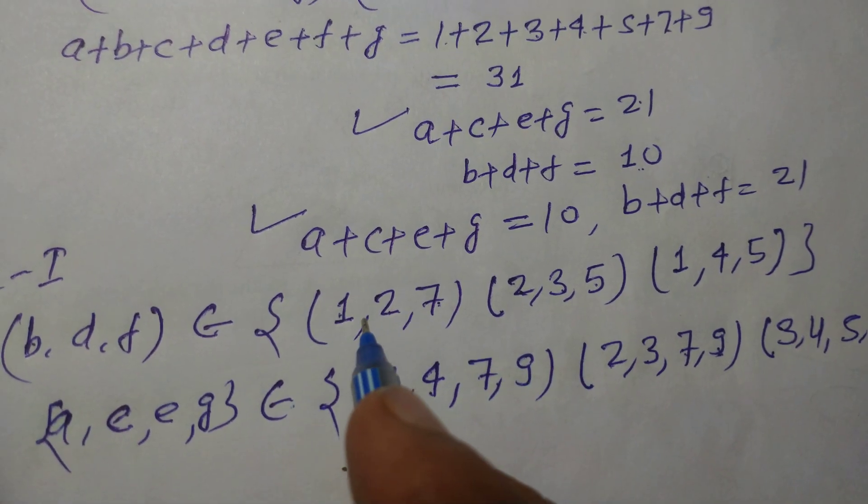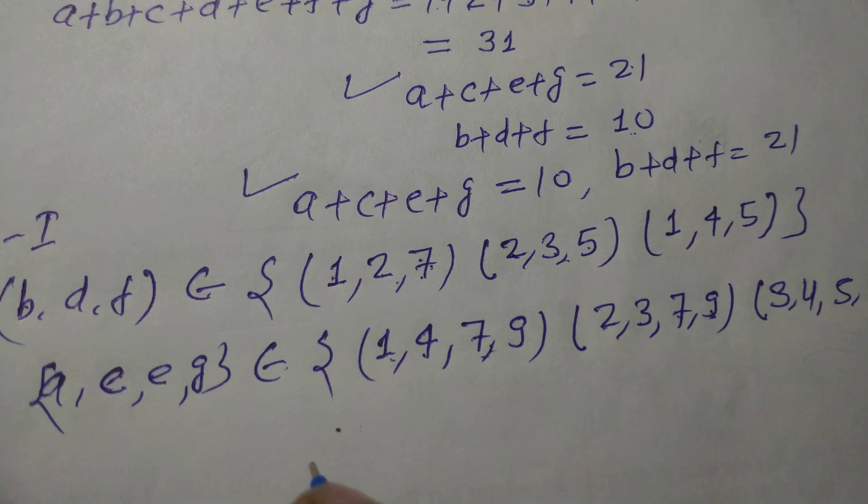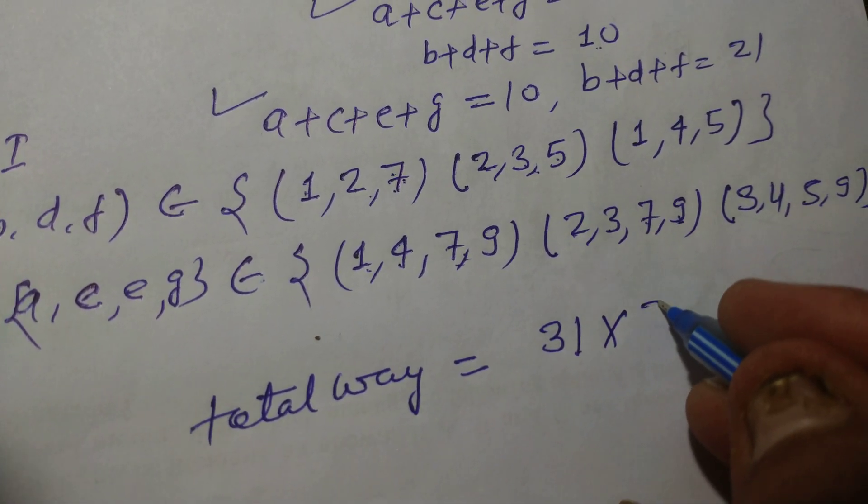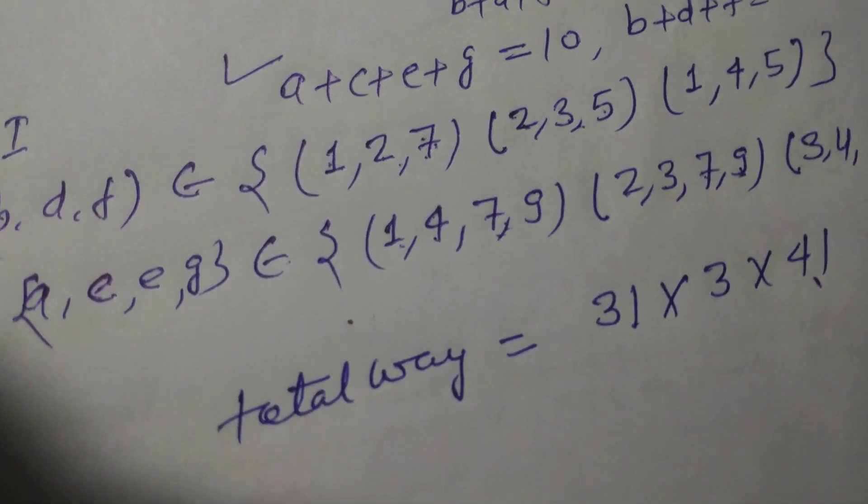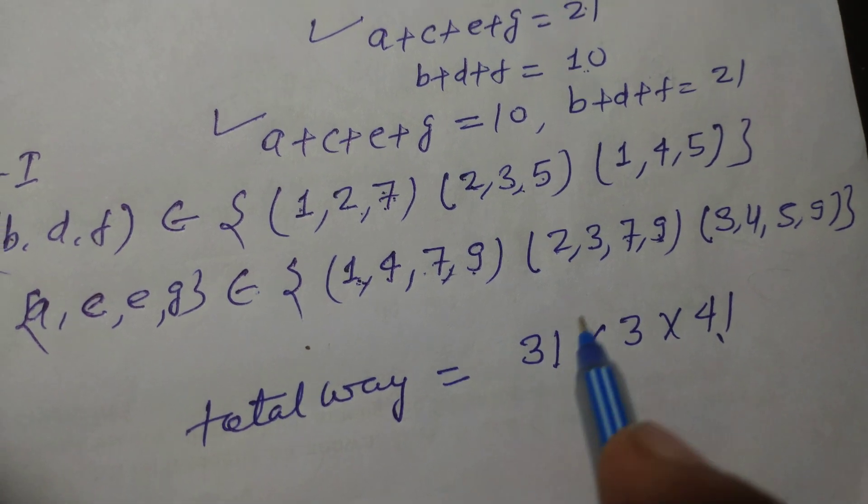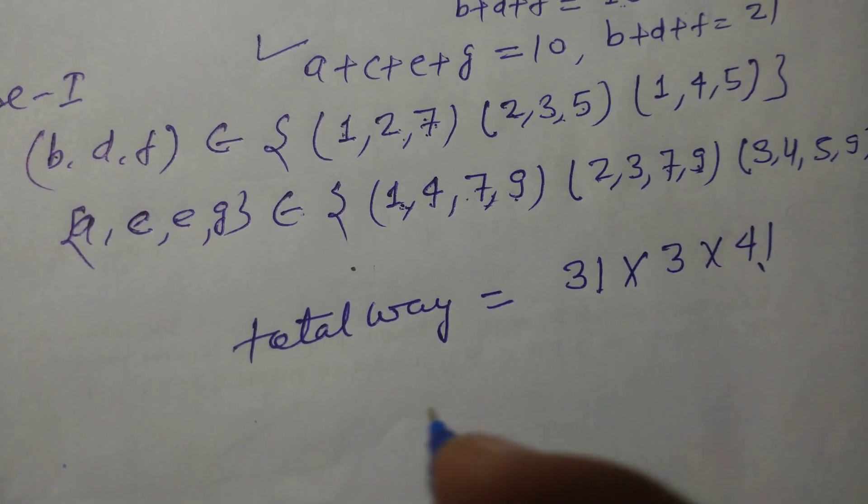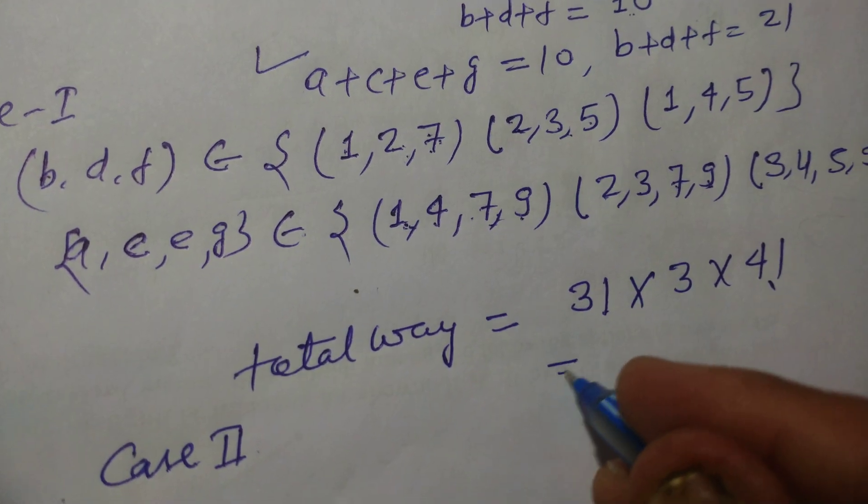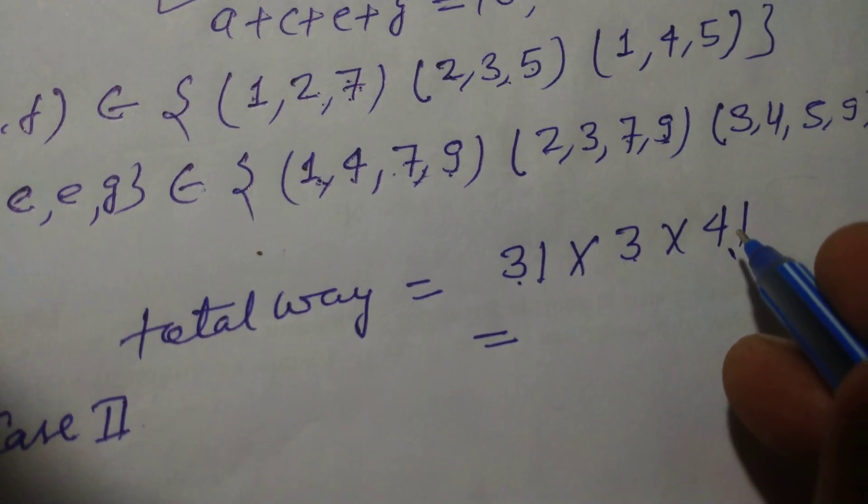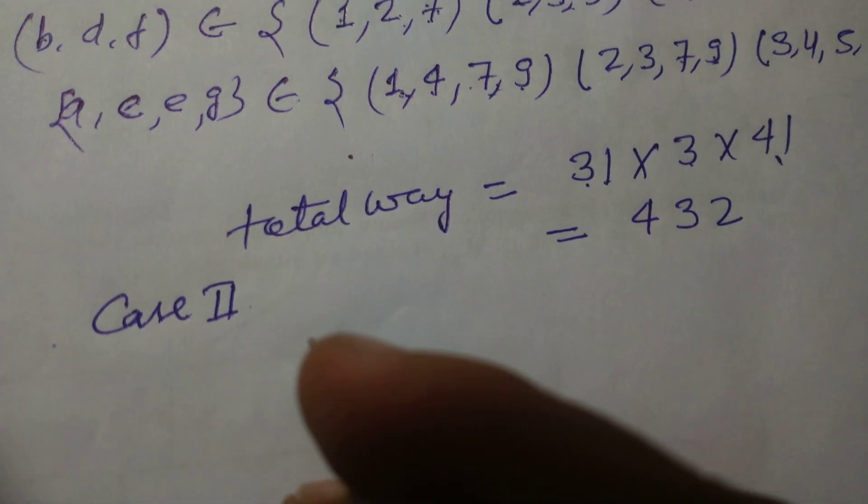So therefore, here three sets in this and there are three elements in this set. So total ways equal to 3 × 3 × 4!. Because these can be interchanged by 4! ways and this can be changed by 3! ways, multiplied by 3. So total ways are this. When we multiply, 3! is 6, 6 × 3 is 18, and 18 × 24 equals 432.